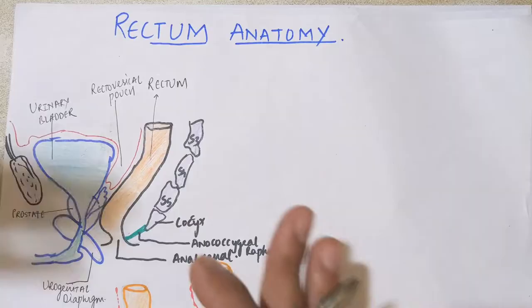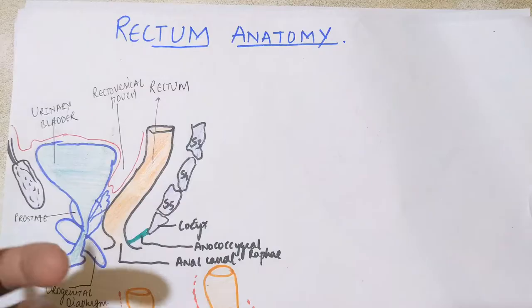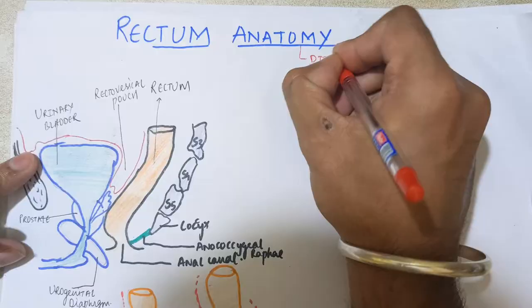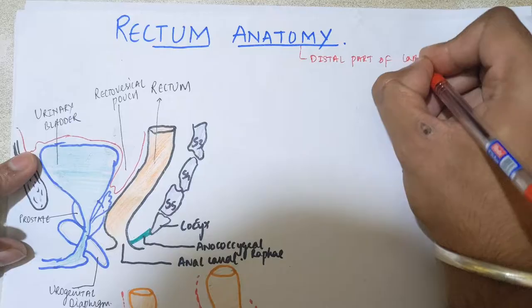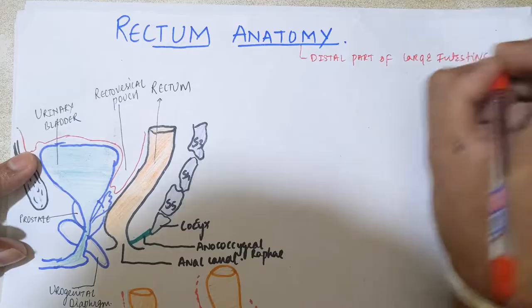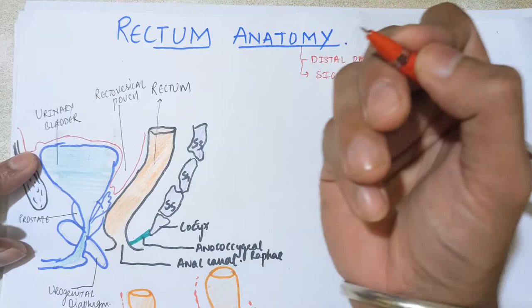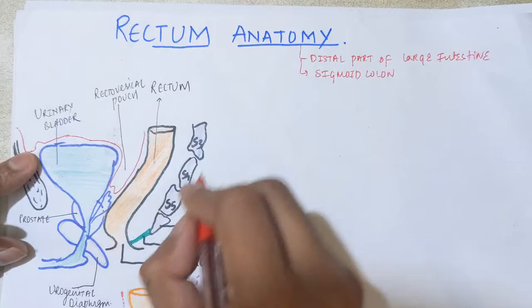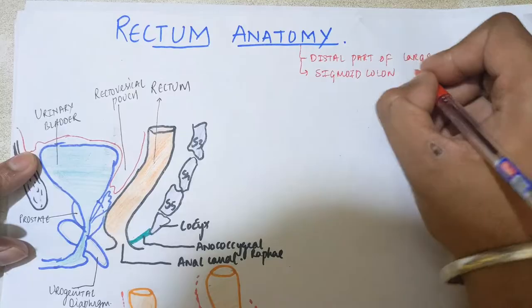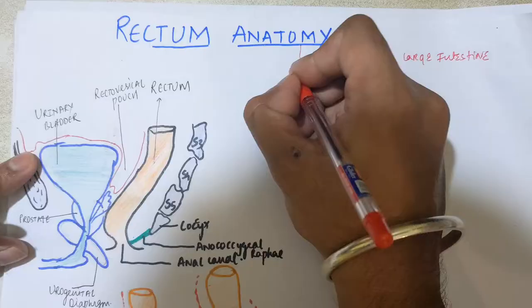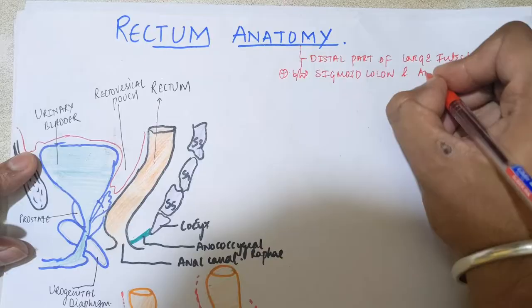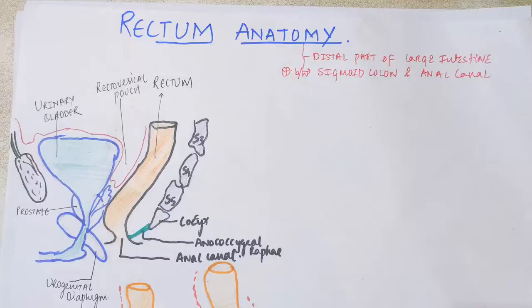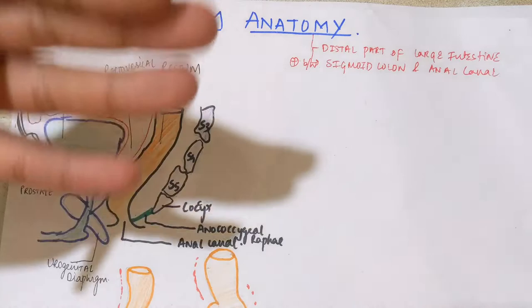First, let's discuss the basic anatomy — where it extends, what is the length, and what are the curvatures. The rectum is the distal part of our large intestine — the most distal part. It is continuous proximally with the sigmoid colon, which is part of the large intestine, and distally it is continuous with the anal canal. In simple terms, the rectum is present between the sigmoid colon and the anal canal.